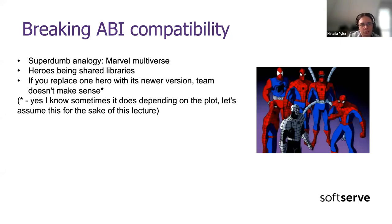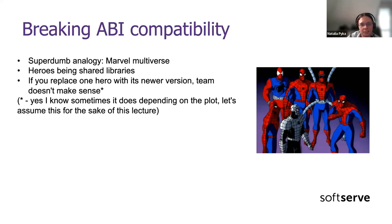Here is a simple analogy about ABI and why it's important. Imagine each application is a Marvel movie with Marvel heroes who are in this case shared libraries. In such a story, if you replace one hero with a newer version or one from a different multiverse, the story doesn't make sense because it's not balanced. That shows more or less what problems are possible and why your application just won't work.